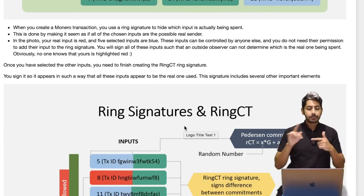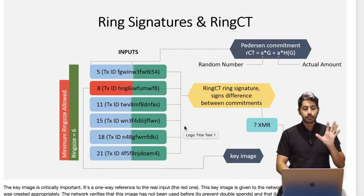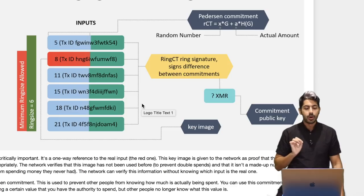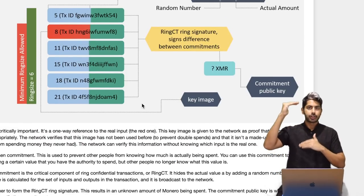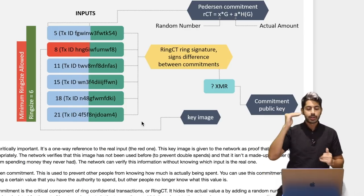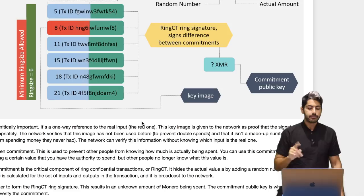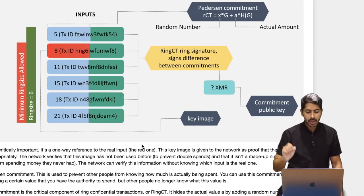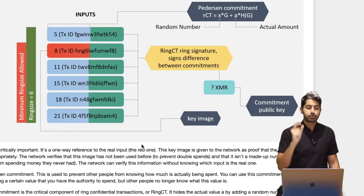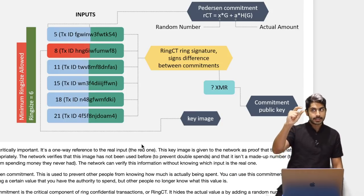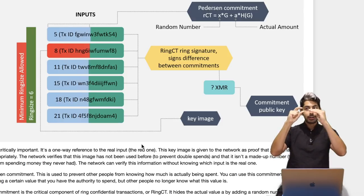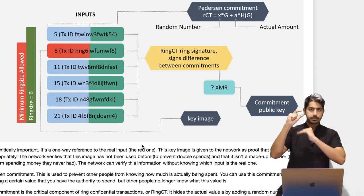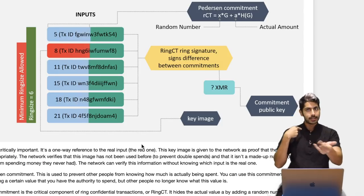Once the inputs are selected, we finish creating the Ring CT ring signature. The Ring CT ring signature is used to hide the amount spent; the ring signature hides the sender; the stealth address hides the receiver. A key image is created from all of these transactions — it's one hash given to the network as proof the signature was created appropriately. The network verifies that this image has not been used before to prevent double spending. The blockchain keeps a list of all key images and checks for a match. If the key image has been sent before, it's double spending and is rejected. That's how double spending is prevented using the key image.